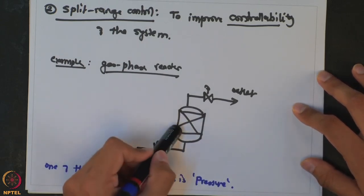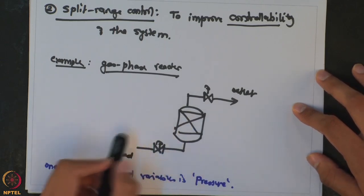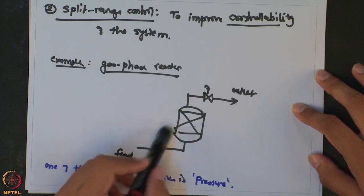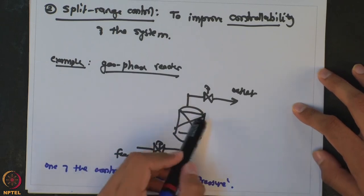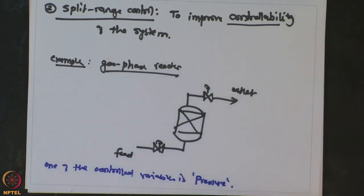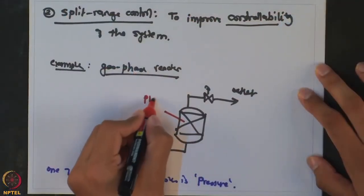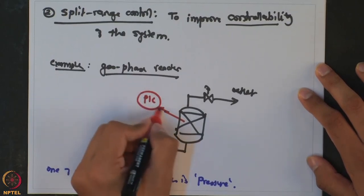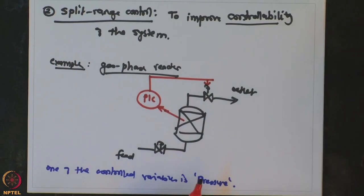Typically when selecting pairings between input and output, you want minimum effect of pressure or inventory control on the actual operation — the reaction. You typically use the feed valve to control the throughput, so you would want to control this pressure using the outlet valve so it does not affect reaction productivity.